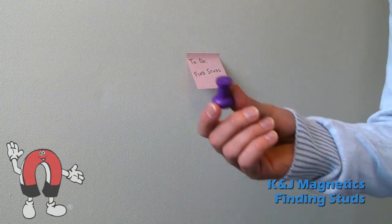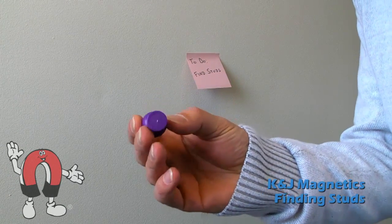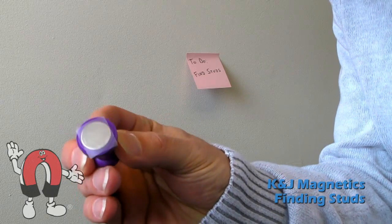In this video, K&J Magnetics will use some neodymium magnets to find the hidden studs behind drywall.